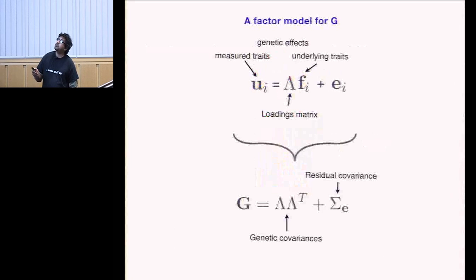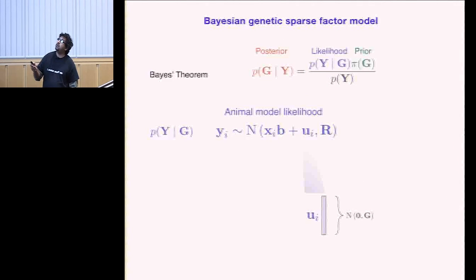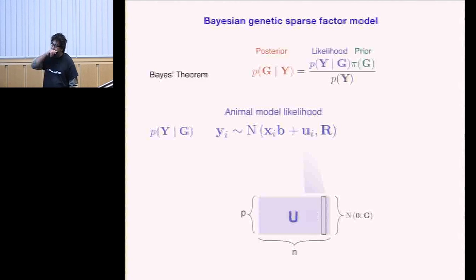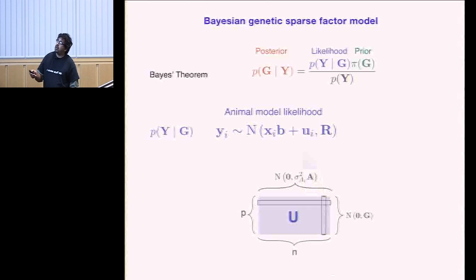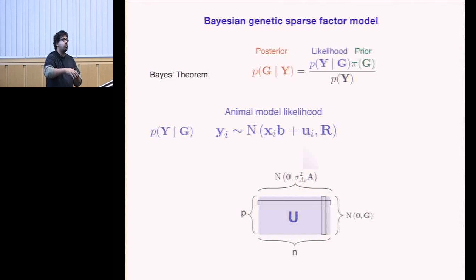My measured trait equals my loading times my underlying traits plus additive noise, and from this I can pull out the covariance matrix. In the Bayesian model, I have my likelihood, my a priori assumptions on genetic covariance matrices, and priors. The animal model likelihood uses a normal model where, across traits for any individual, they're explained by the G matrix — the additive genetic variance-covariance. Across individuals, they're related via the kinship matrix. If you know kinship structure or have genetic data, you can estimate this.